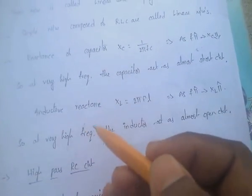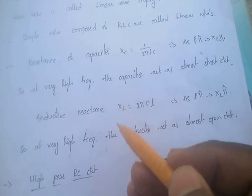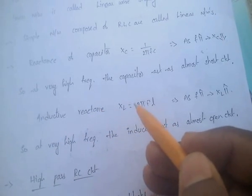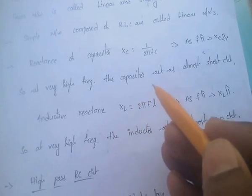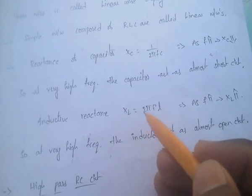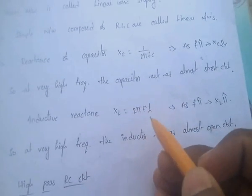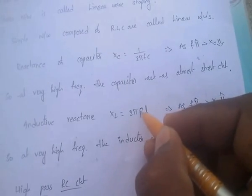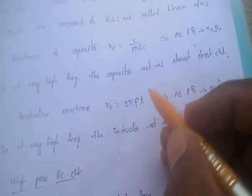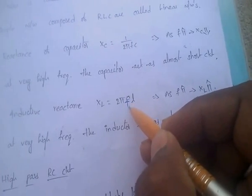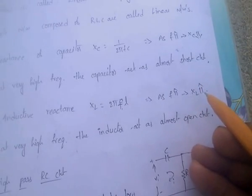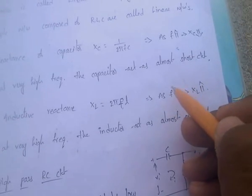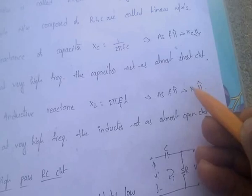The inductive reactance Xl equals ωL, where ω equals 2πf, so Xl equals 2πfL. This means Xl is directly proportional to frequency. As frequency is very high, the Xl value is also very high.